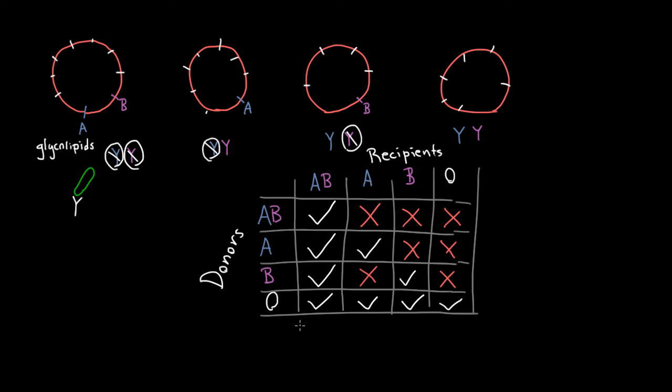So something interesting you'll notice here is, as we just said, O can give to anyone, because the O blood type has no A's or B's on it, so no one's going to react to it. So for that reason, we call O the universal donor. And the other interesting thing you'll notice is that AB can receive from everyone. So for that reason, we call him the universal recipient.